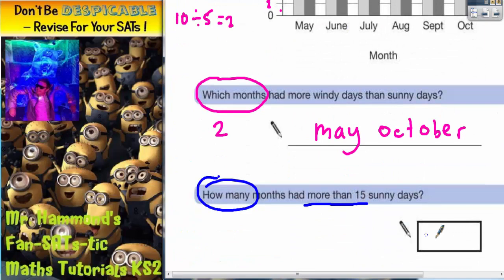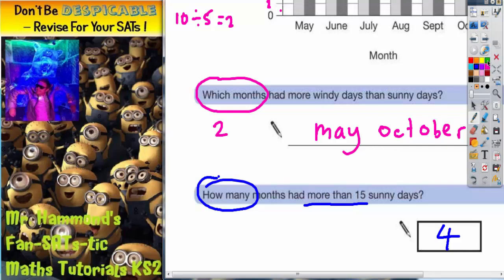So on the answer line we write four months. Now we need one more color because there is one more part of the question.